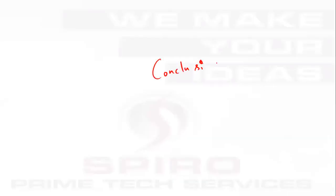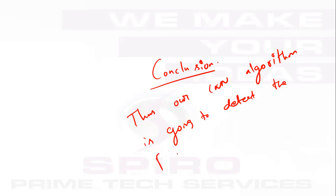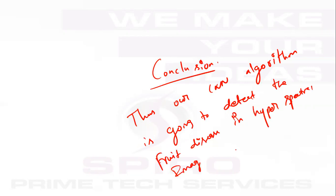In conclusion, our CNN algorithm is going to predict the fruit disease in hyperspectral images in an advanced manner. Thank you.